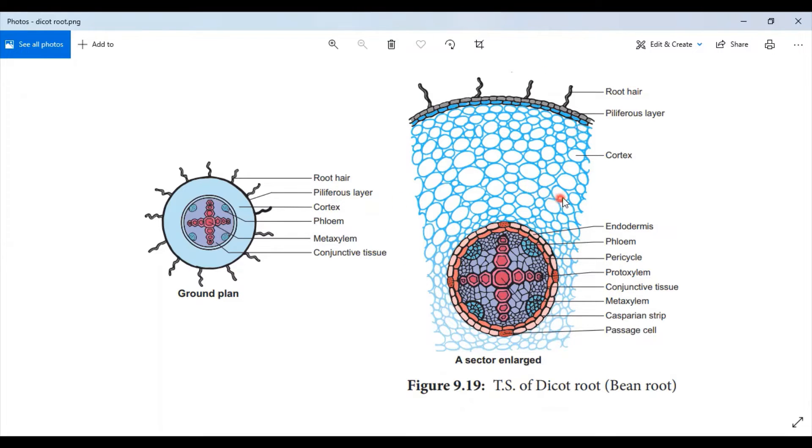The outermost layer of the root is known as epiblema or the piliferous layer. It is made up of a single layer of parenchyma cells which are compactly arranged without intercellular spaces. It possesses root hairs which are single-celled. The function of piliferous layer is protection.